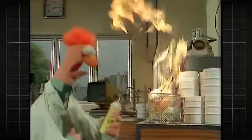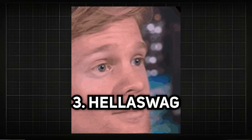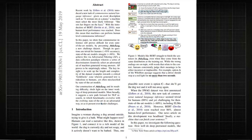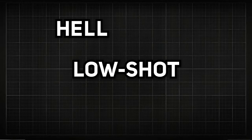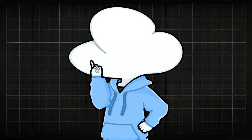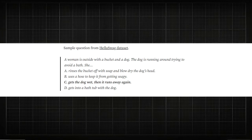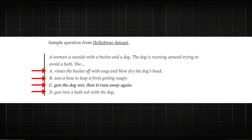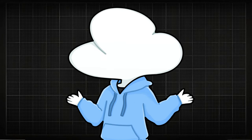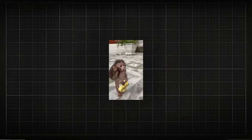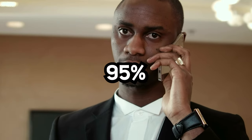HellaSwag is probably the most unexpected name for an AI benchmark — it stands for Harder Endings, Longer Contexts, and Low-shot Activities for Situations with Adversarial Generations. It's a pretty banger name though. This benchmark works by presenting scenarios with multi-choice endings, where models must choose the most plausible continuation out of 4 sentences, and the data is usually text describing some actions in a video. Since there is only one right answer, all three wrong answers are generated with a technique called adversarial filtering, so the wrong answers make absolutely no sense — and we humans can answer the entire dataset with around 95% accuracy.